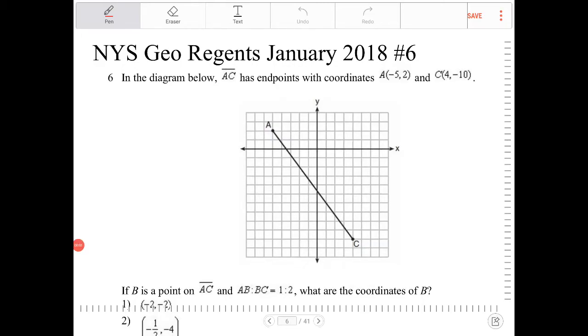In a diagram below, AC has endpoints with coordinates A(-5, 2) and C(4, -10). If B is a point on AC, and AB is proportional to BC by a ratio of 1 to 2, what are the coordinates of B?